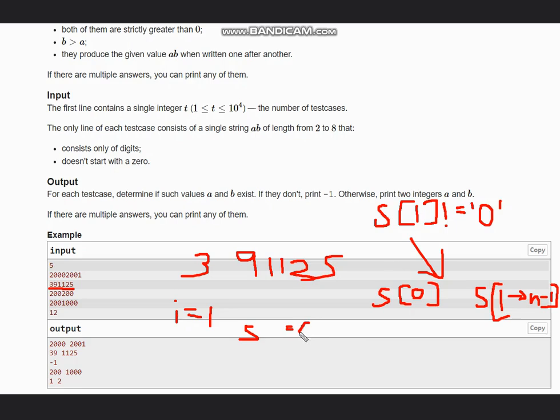After this, whenever a zero is not encountered the loop breaks. The value of i at which the loop breaks - till that value we take the substring. So our first substring will be 0 to i, and next will be the remaining.